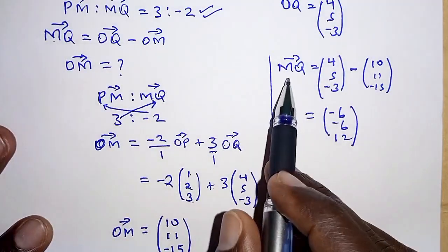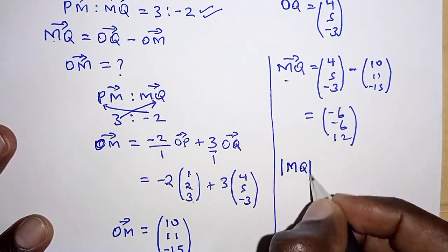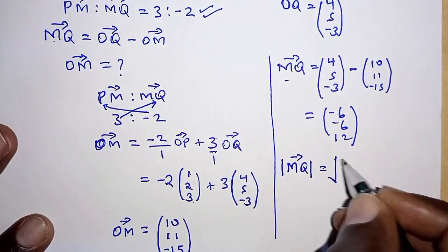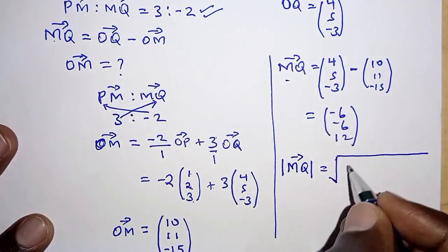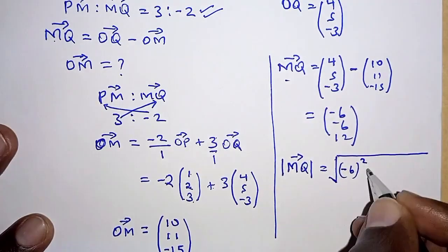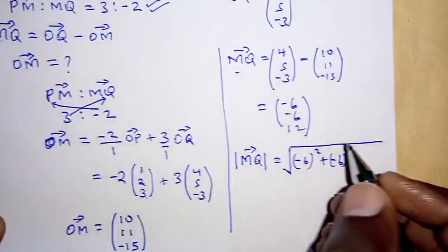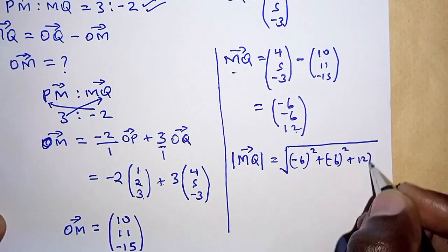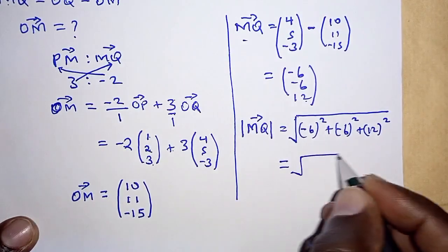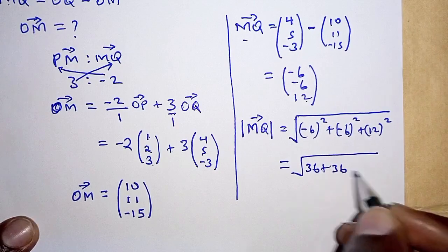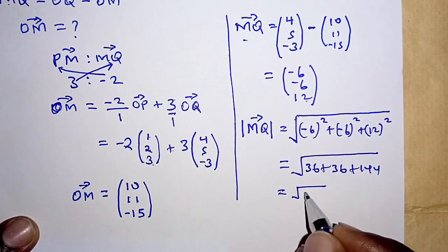Our task is to obtain the modulus of MQ. The modulus of MQ which is just the length of MQ is obtained as the square root of the sum of the squares of these elements here. So we have negative 6 squared plus negative 6 squared plus 12 squared. Working out this, we have this is 36 plus positive 36 plus 144.